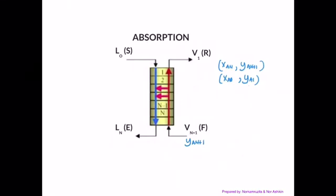And you also have another component, which is also called carrier. Normally it is air, and it is labeled as y_bn+1.